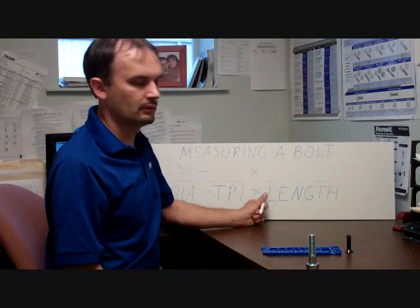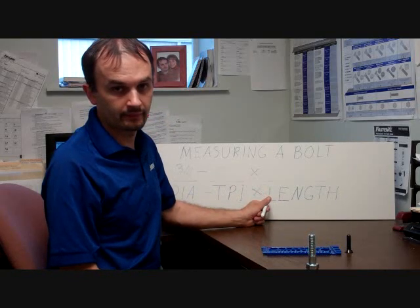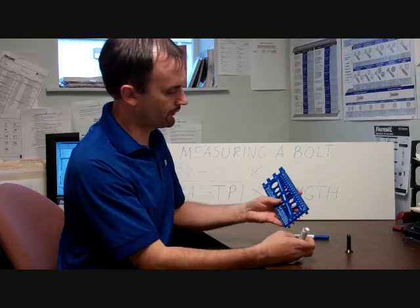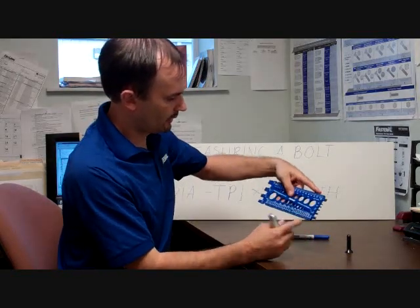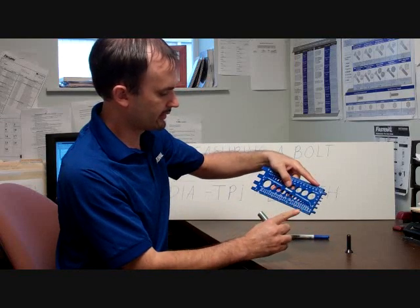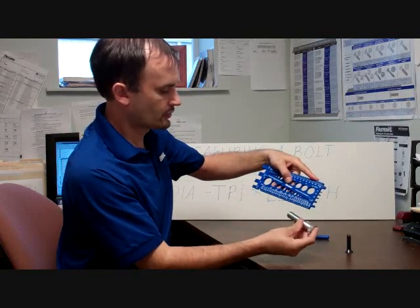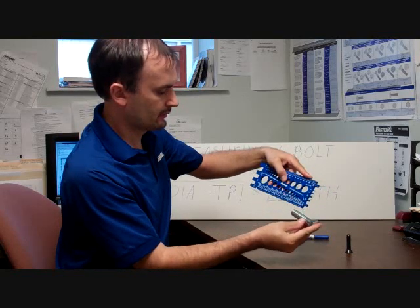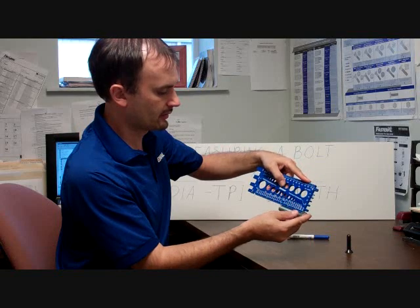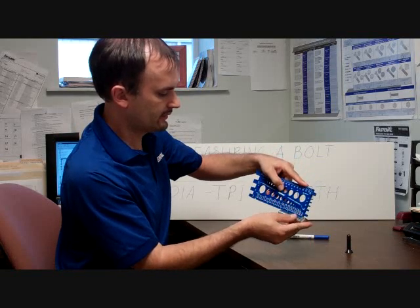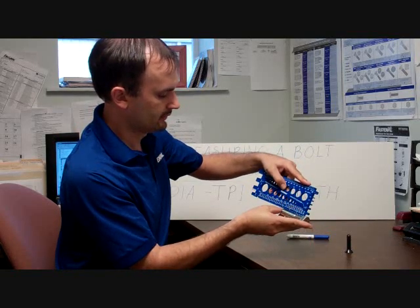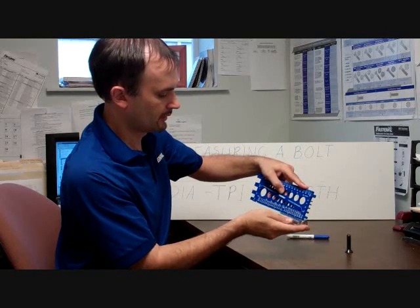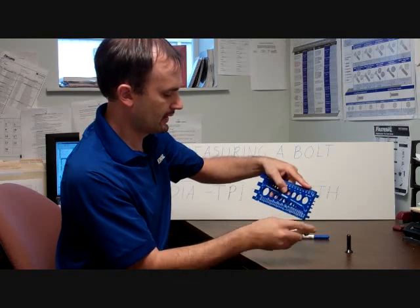And all that we have left is our length. So to get the length of our bolt, we're going to go back to the front here, where we have inches on the bottom side. And we're just going to hold our bolt, just hold this corner right to the bottom of the head of our bolt, and see how far the length extends here. And we can count 1, 2, 3 inches. So this bolt is 3 inches in length.